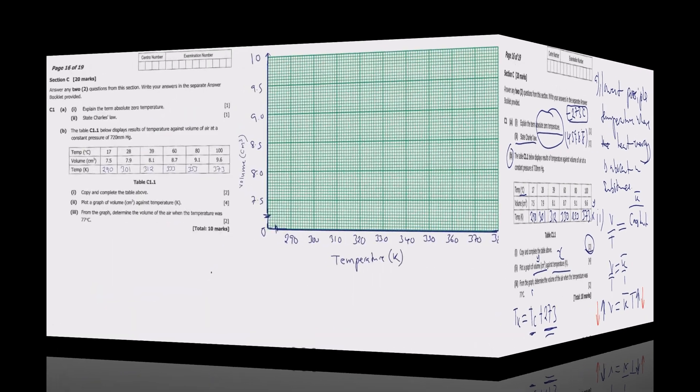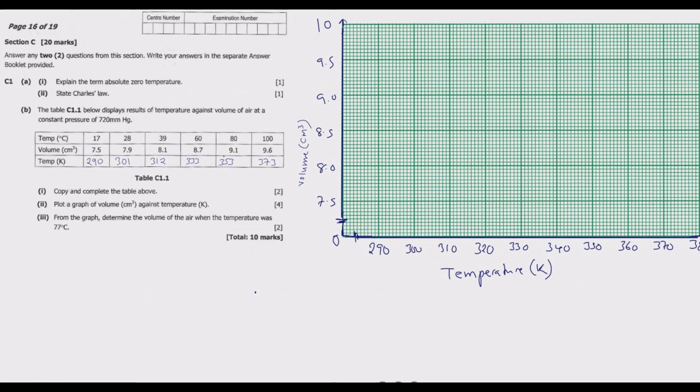Let us move to the graph paper. If you look at the graph paper, one thing you need to pay particular attention to is make sure that you label it correctly. We have temperature in Kelvins along the x-axis. Then we have volume in centimeter cubic along the y-axis. Make sure these are properly labeled. Then it's straightforward to transfer this information to the graph.